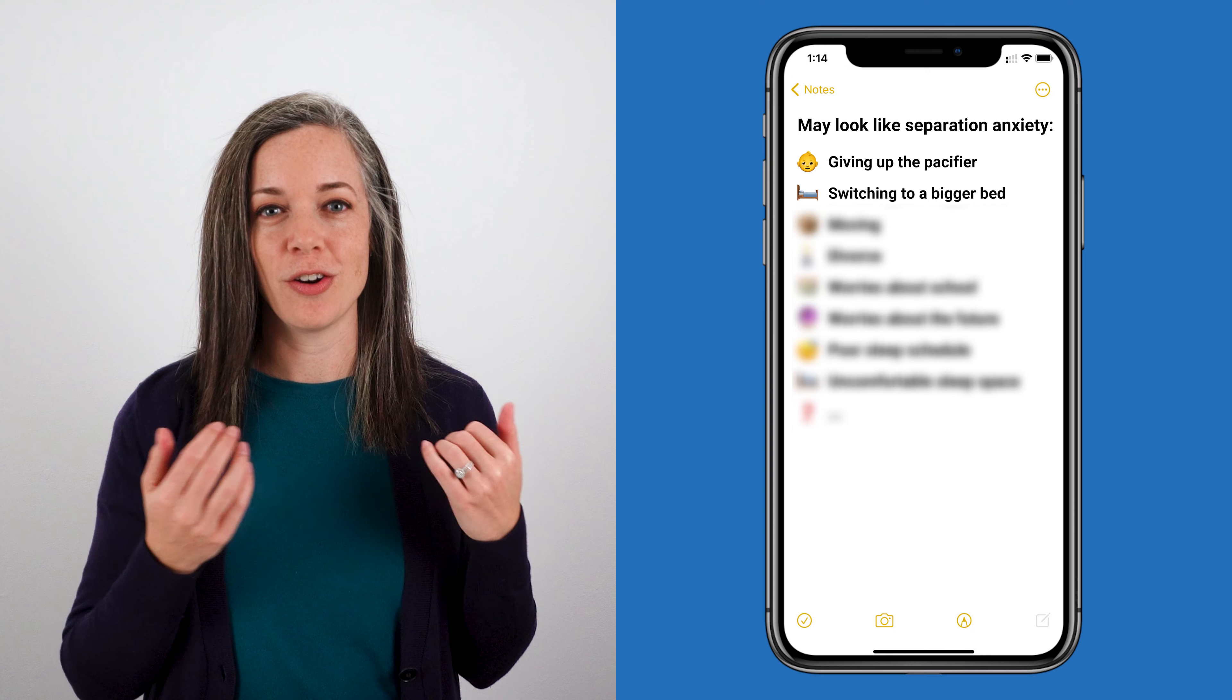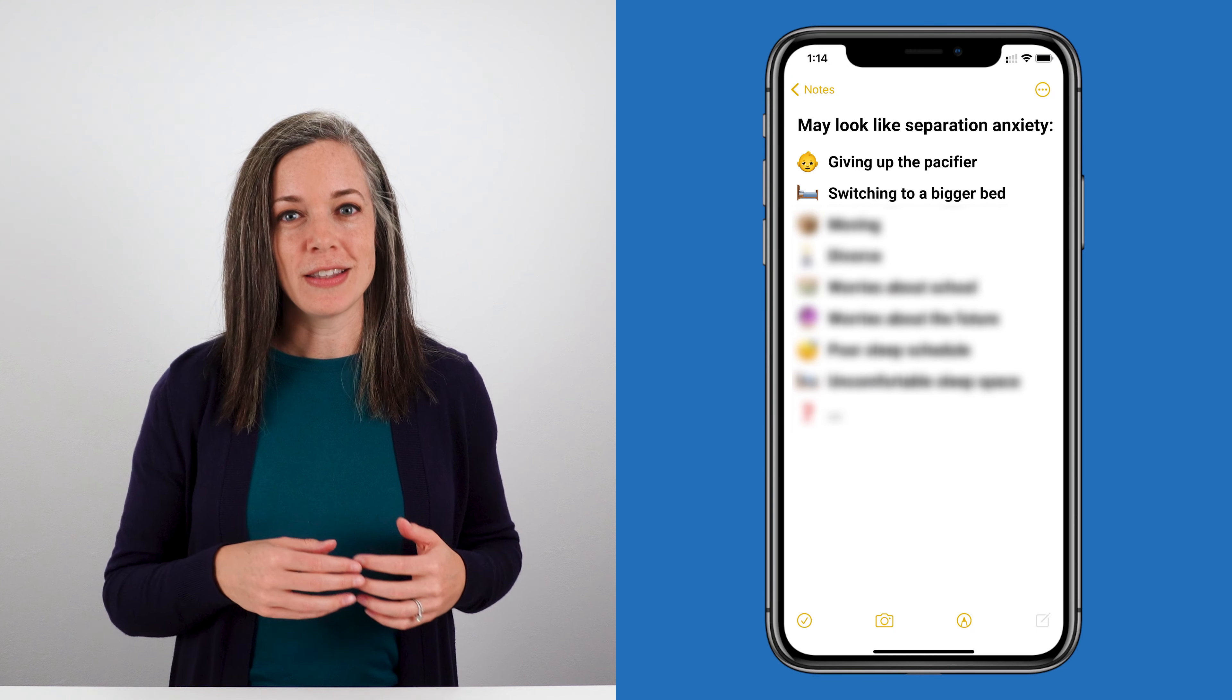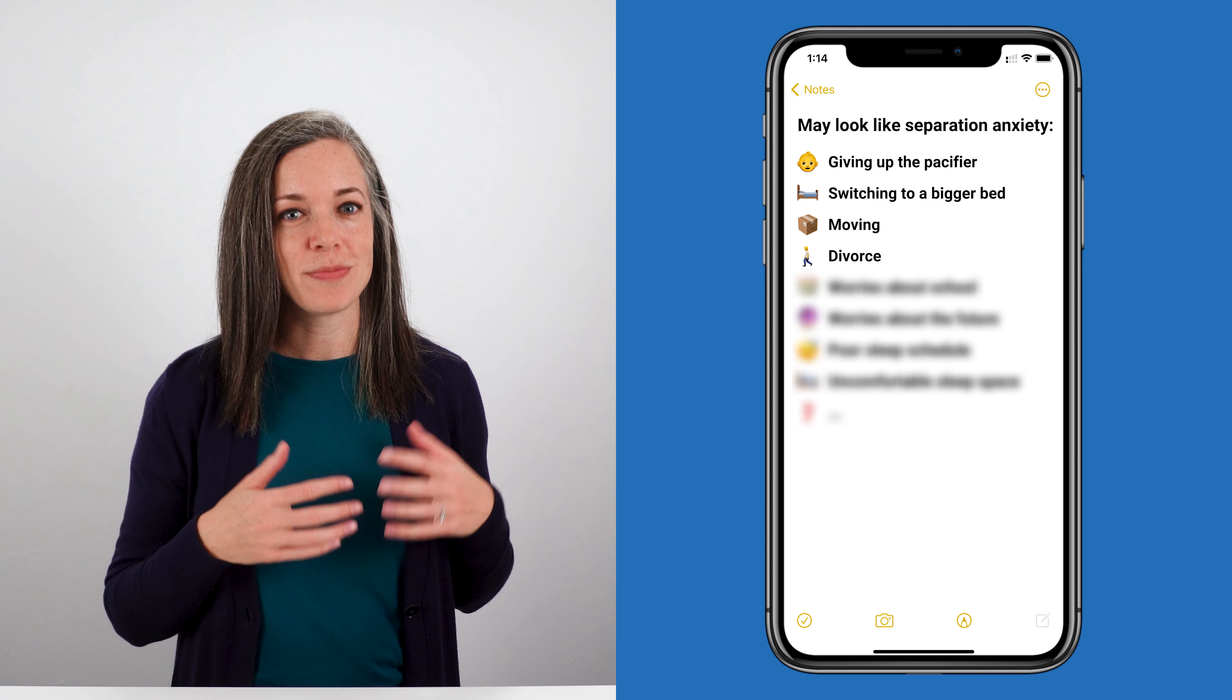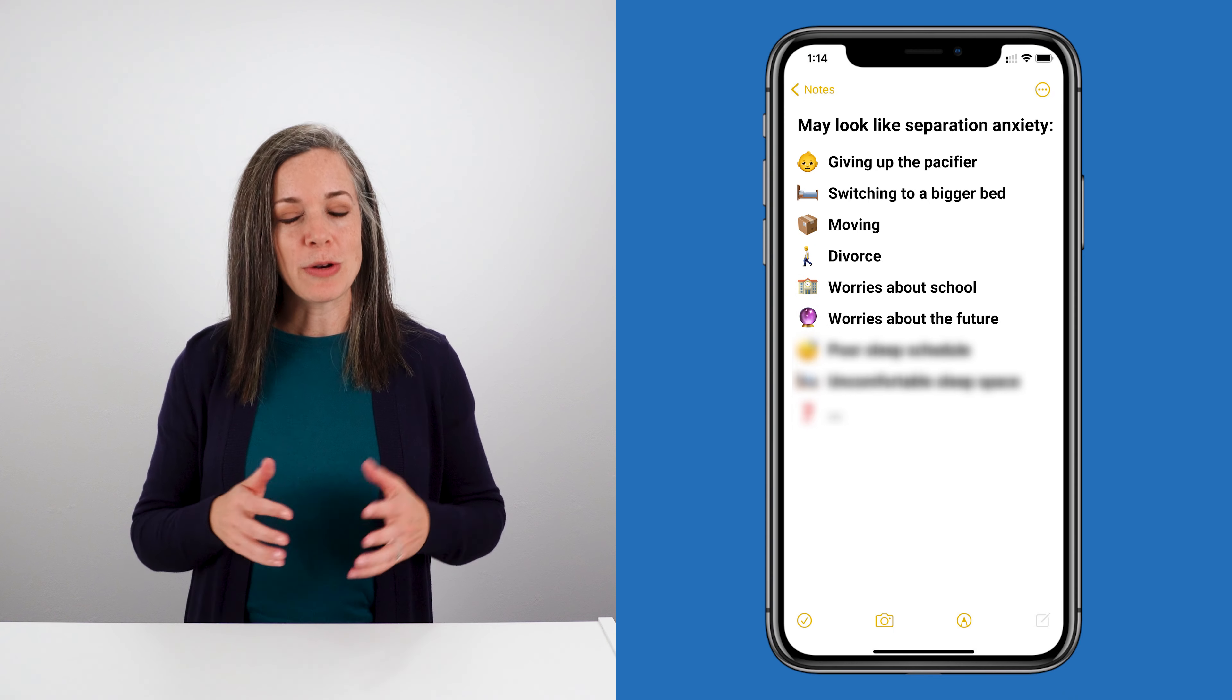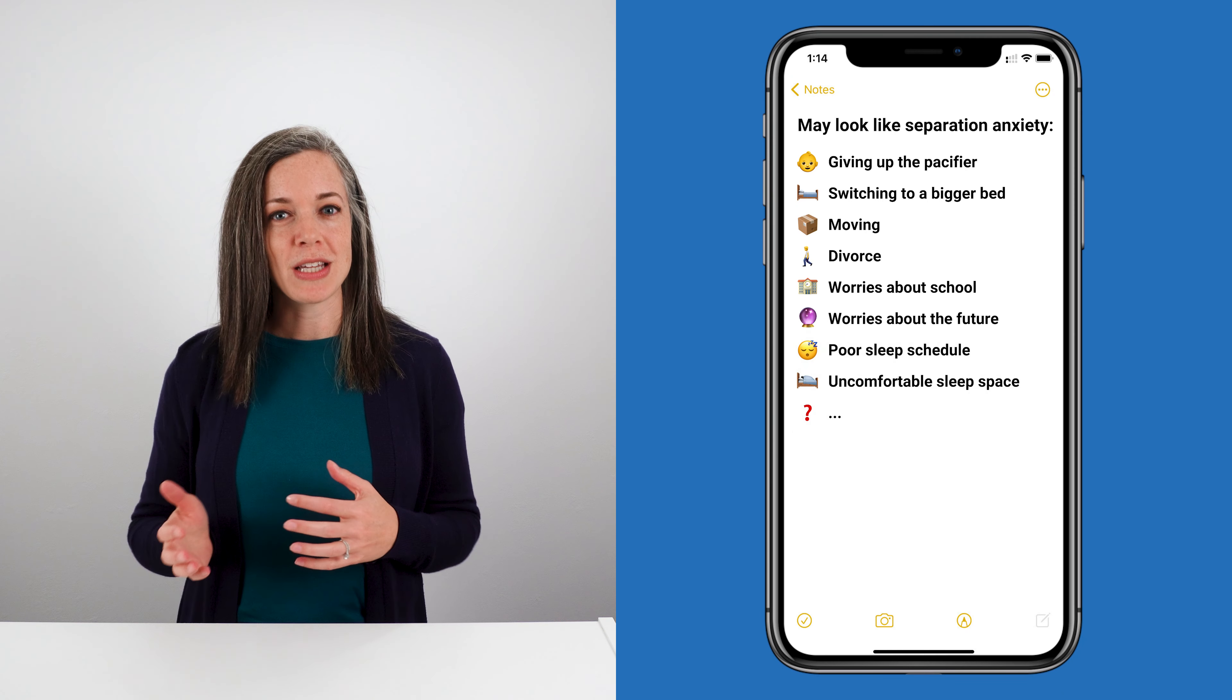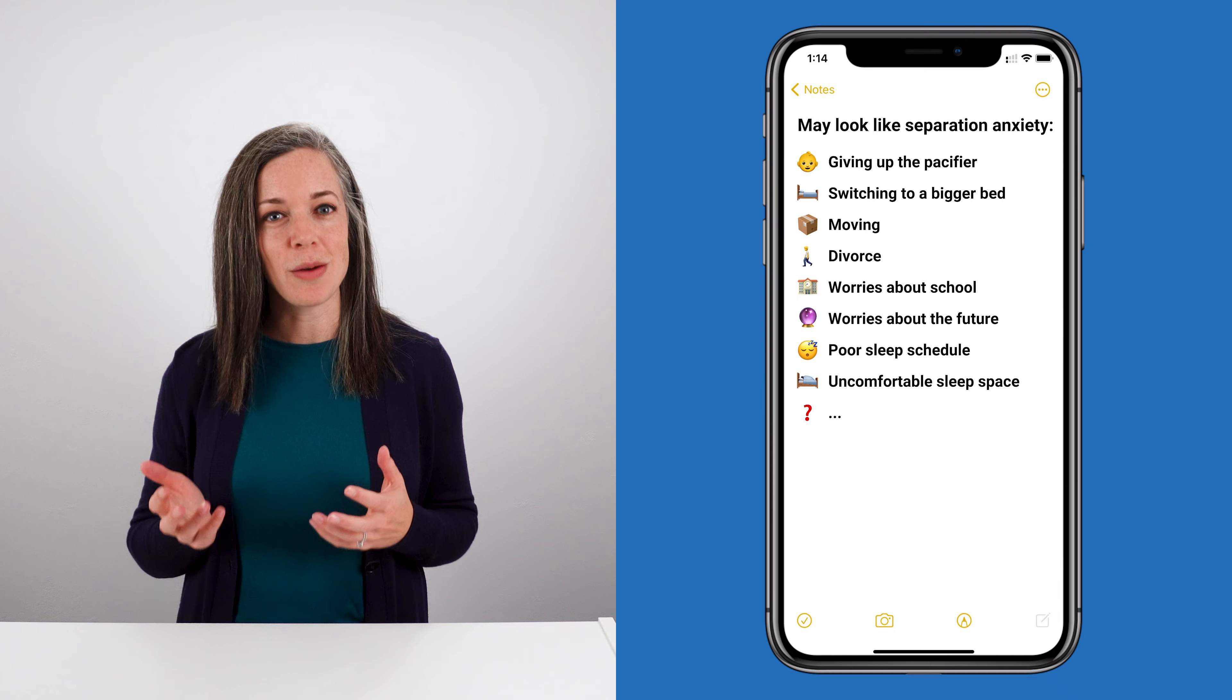There are a lot of things that can end up looking like separation anxiety. For example, changes around bedtime, like giving up a pacifier or thumb sucking or switching to a bigger bed or different life events like a move or divorce or other things like worries about school or the future or more general problems with sleep like a poor sleep schedule or a sleep space that's too bright, too warm, or too uncomfortable in some way.